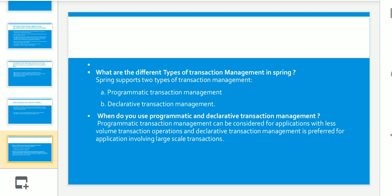The next question was on transaction management — a commonly asked interview topic. What are the different types of transaction management in Spring? Spring supports two types: programmatic transaction management and declarative transaction management. The follow-up question was: when do you use each? Programmatic transaction management is used for applications with a low volume of transaction operations, while declarative transaction management is preferred for applications involving large-scale transactions.